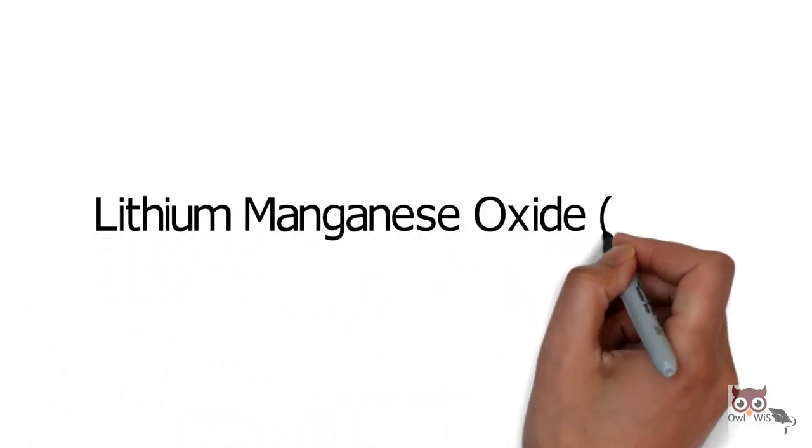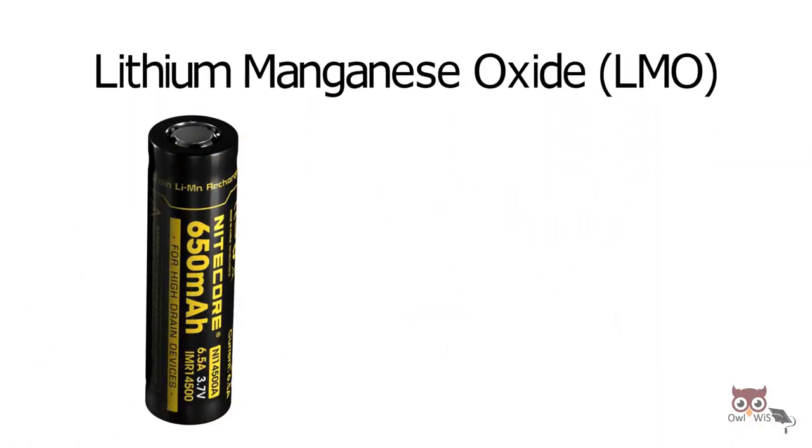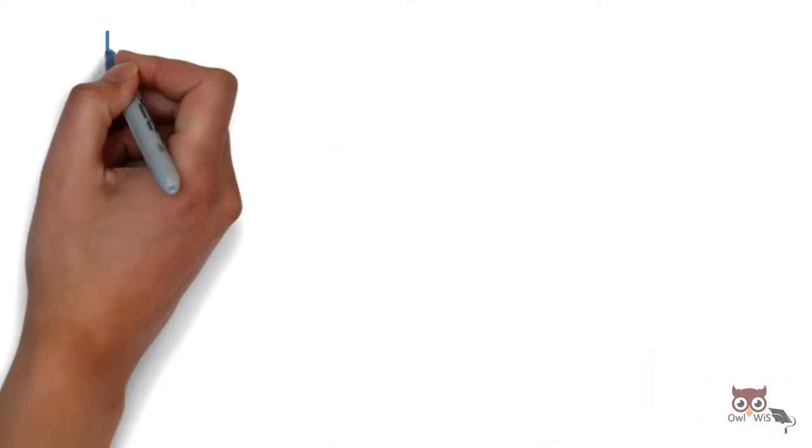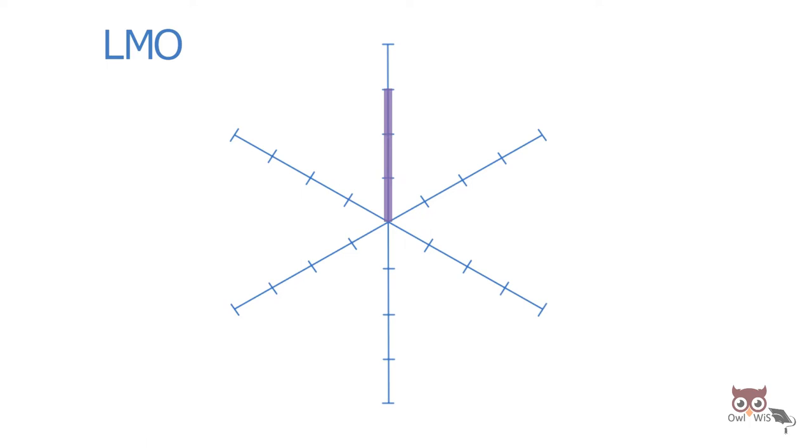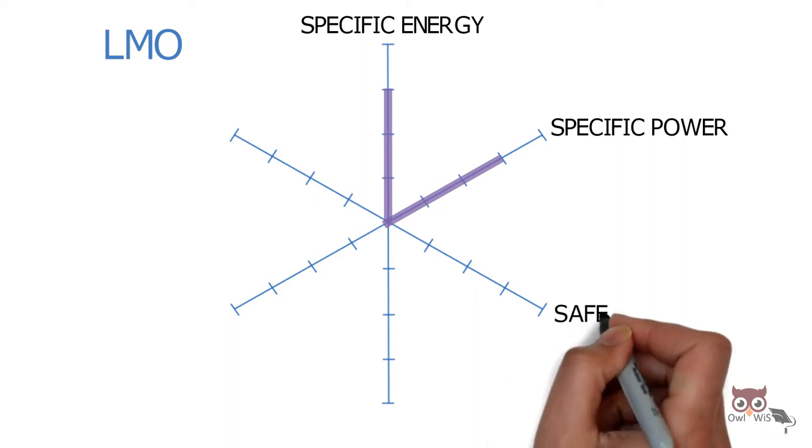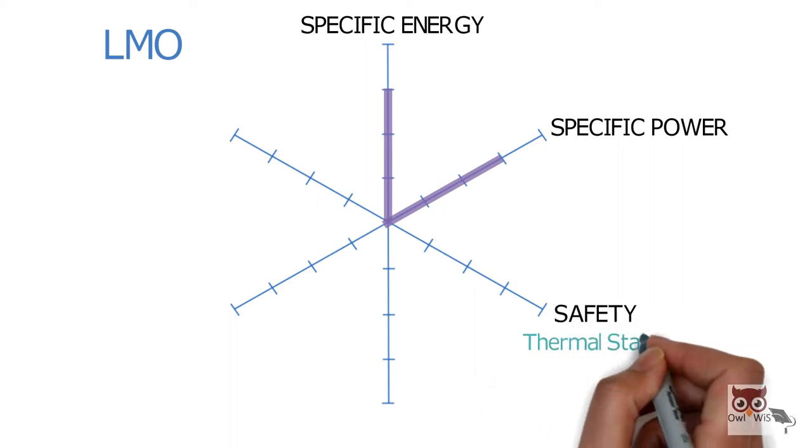Lithium Manganese Oxide (LMO) uses lithium manganese oxide as its cathode. It has optimum specific energy as well as optimum specific power. When it comes to safety, it has good thermal stability.